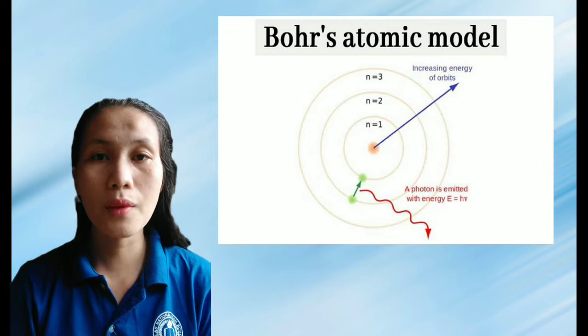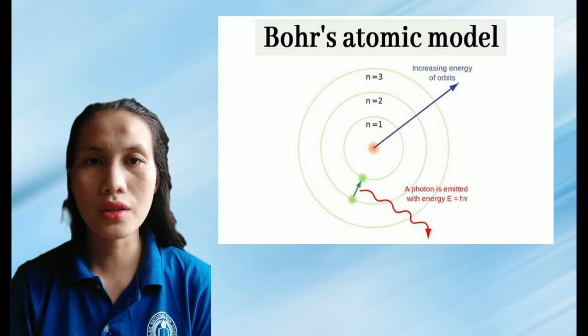The Bohr model has an atom consisting of a small, positively charged nucleus orbited by negatively charged electrons.